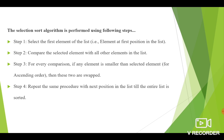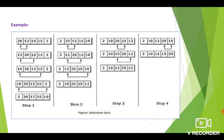The algorithm for selection sort is: first, we have to select the first element of the list. Then you have to compare the selected element with all the other elements in the list. For every comparison, if any element is smaller than the selected element, then you have to do swapping. You have to repeat the same procedure for the next position till the entire list is sorted. We will see with one example.